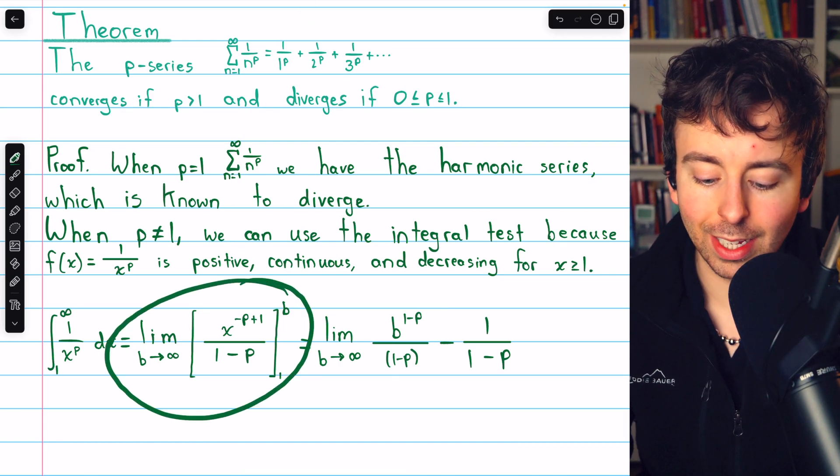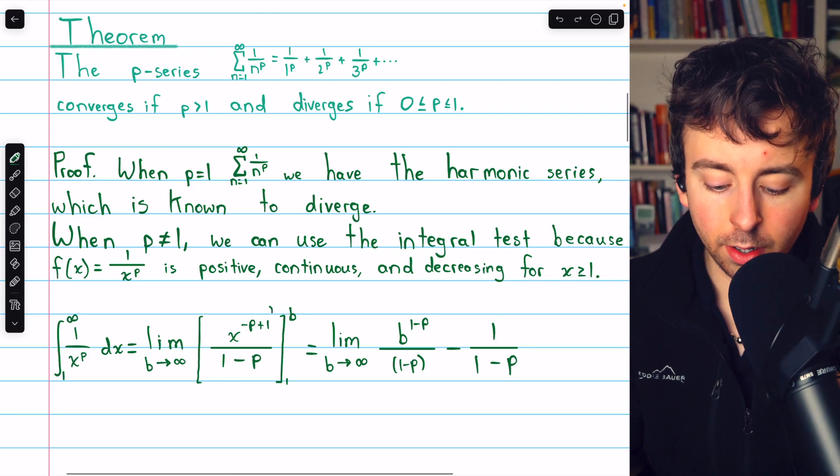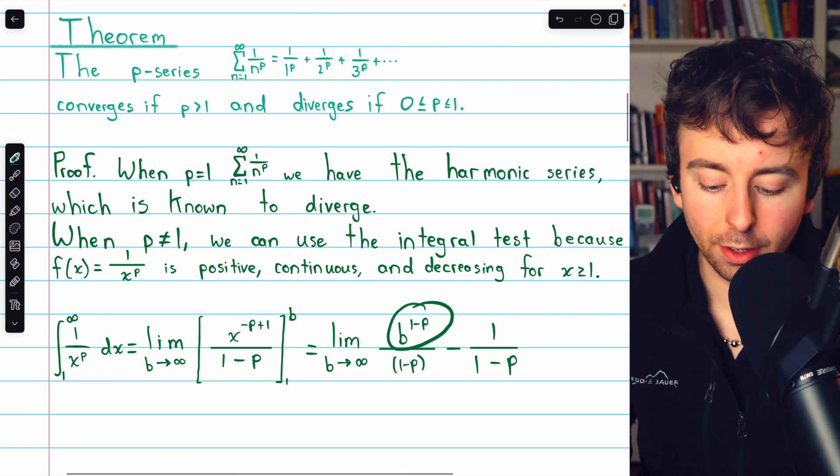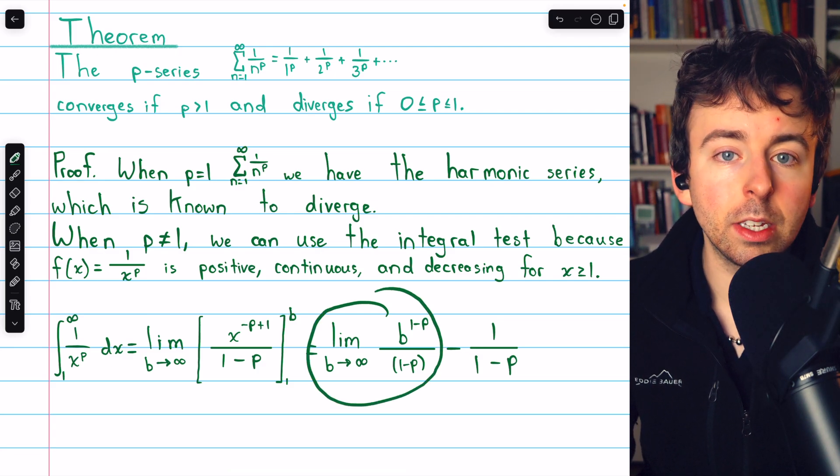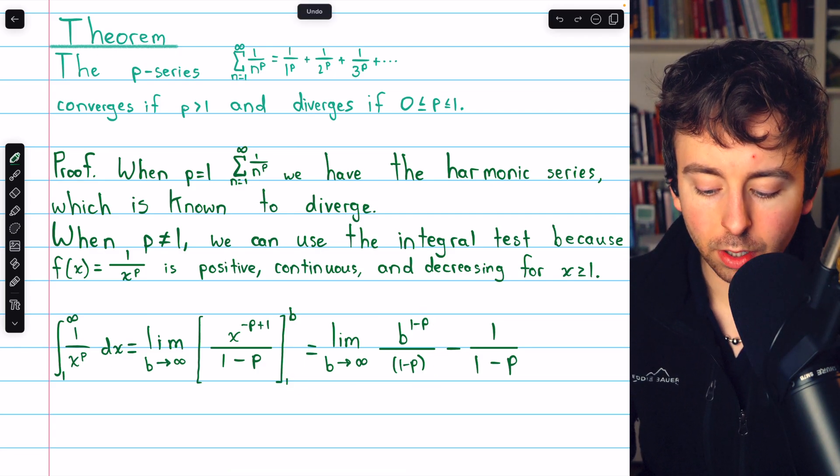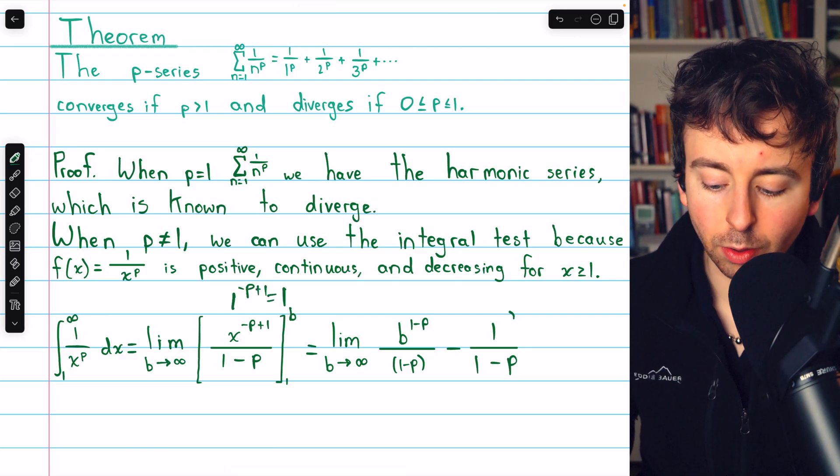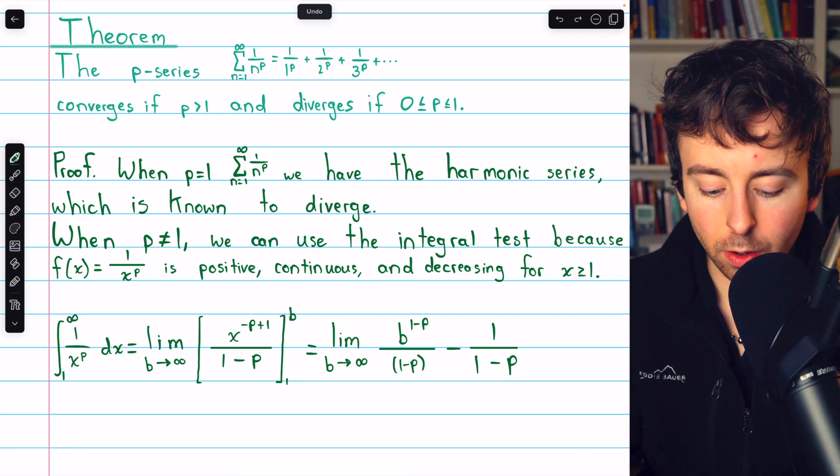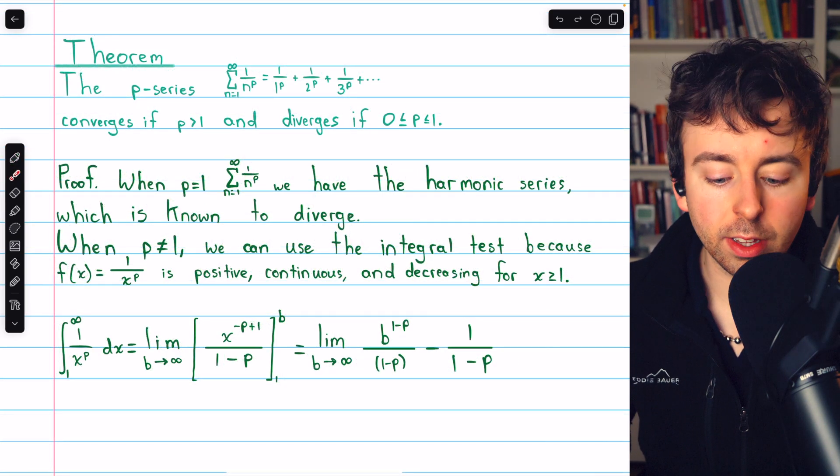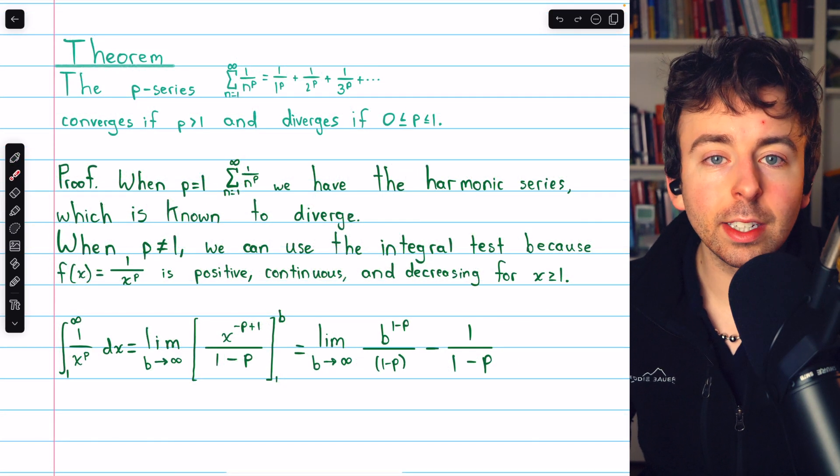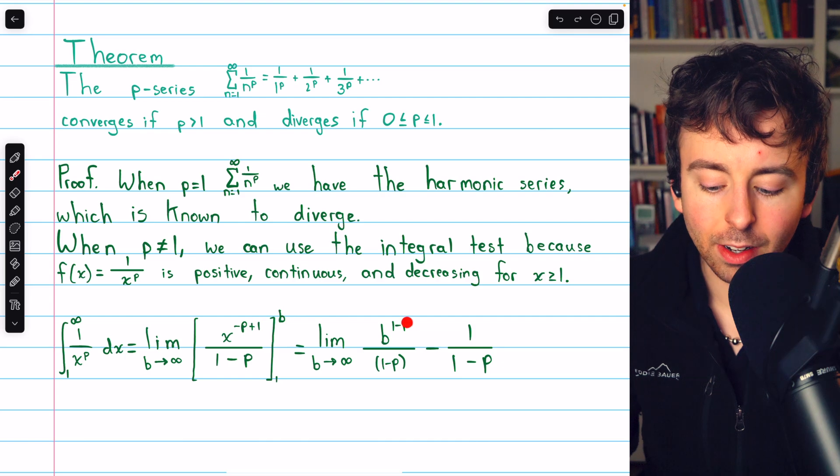Now we'll have to evaluate the limit and plug in these bounds. Plugging in x equals b, we have b to the negative p plus 1, which is the same as 1 minus p, so b to the 1 minus p, still divided by 1 minus p. We're taking the limit of that as b goes to infinity. When we plug in the lower bound, we just have 1 to the negative p plus 1, which is just 1. So that's 1 in the numerator and in the denominator we still just have 1 minus p, and we are subtracting that. Our conclusion about the convergence or divergence of the p-series is going to come down to the convergence or divergence of this integral, which we see is going to depend on the value of p.